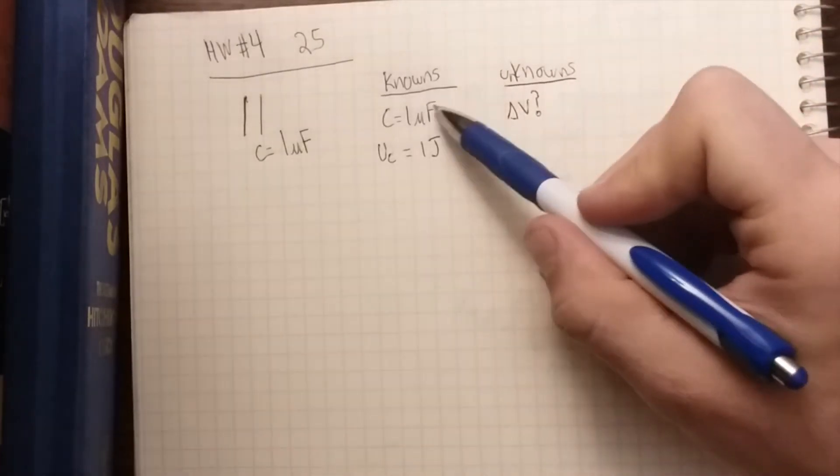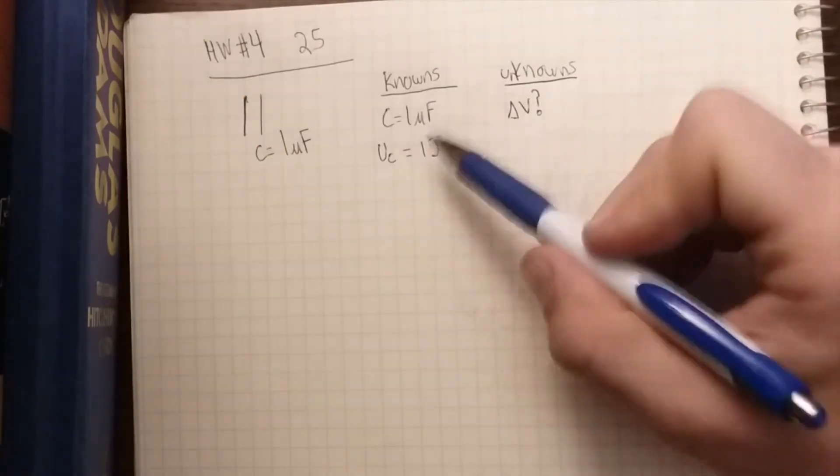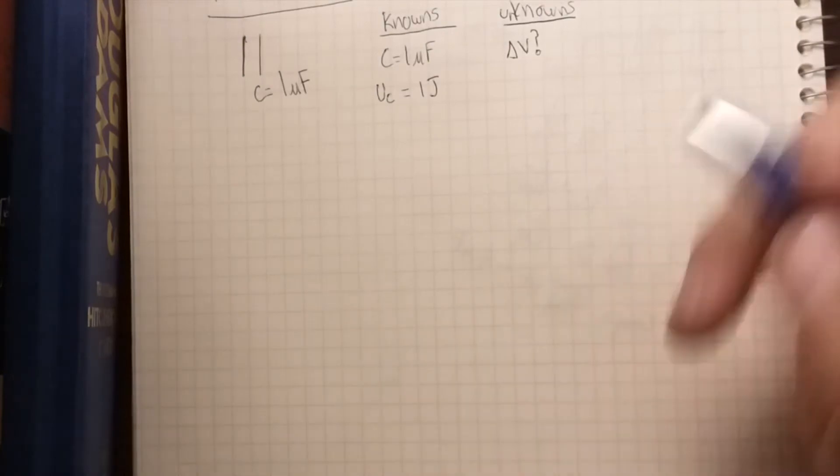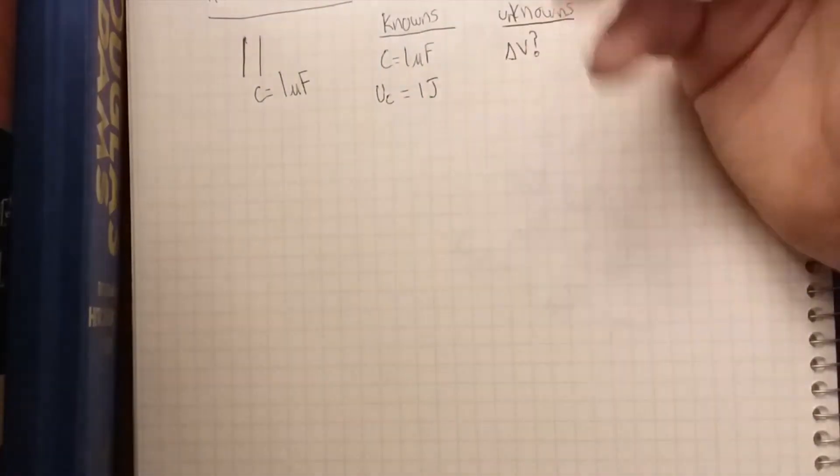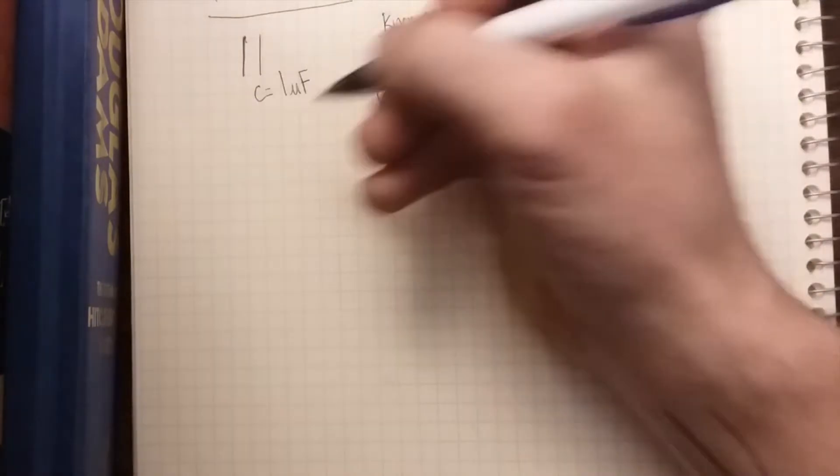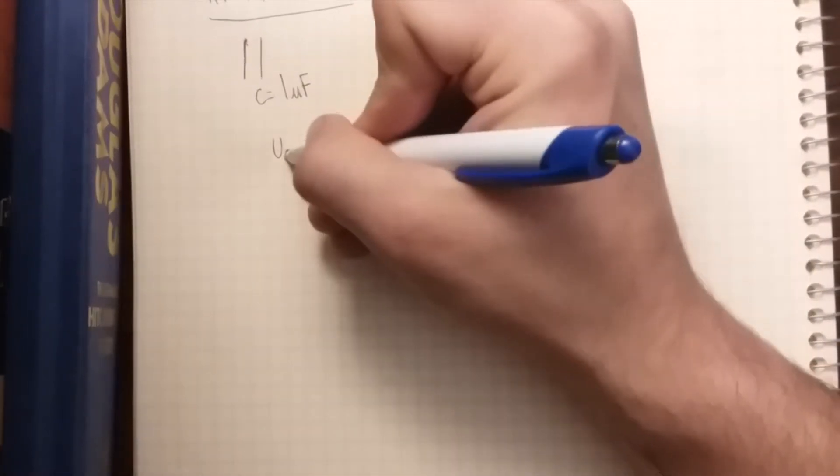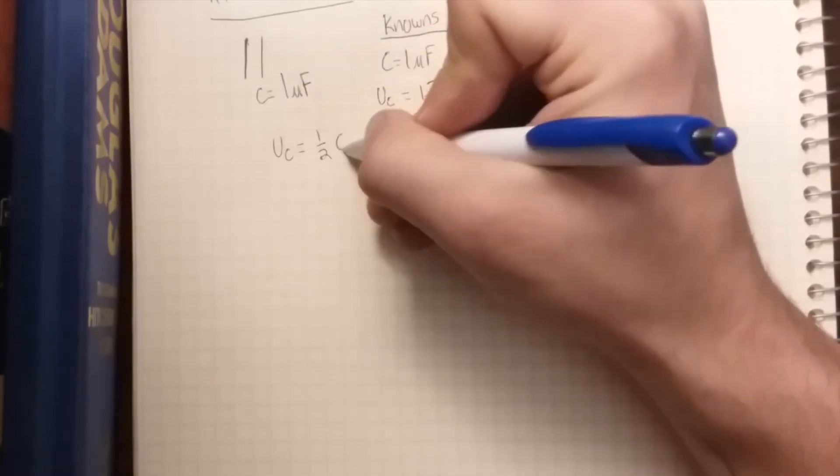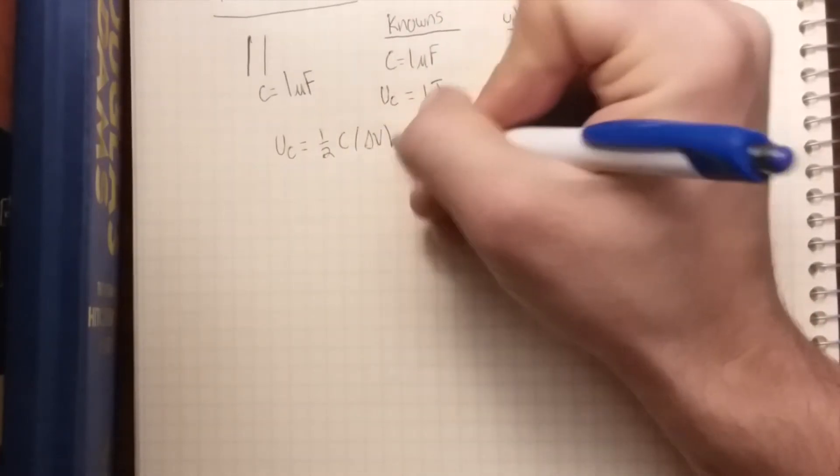So what we're looking for is an equation that relates these three. If we look at our textbook or list of equations, we see that we have UC equals one half C times delta V squared.